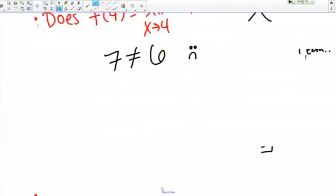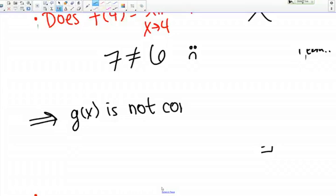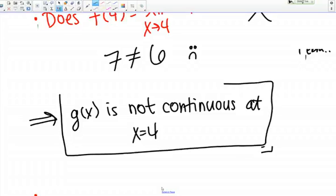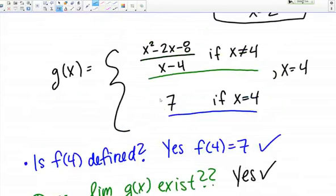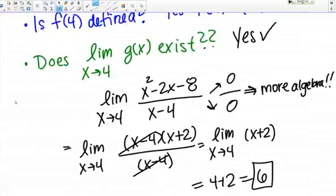So that means that my function is not continuous. So therefore, g of x is not continuous at x equals 4. It was pretty close though, right? The only thing that would have had to change to make this function continuous is g of x would have to equal 6 at x equals 4. And if that were the case, then this would have been continuous, but it's not.